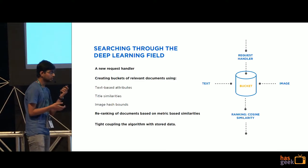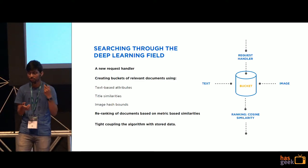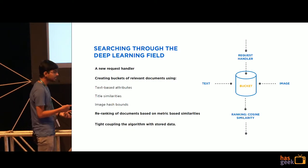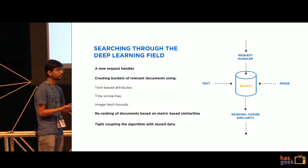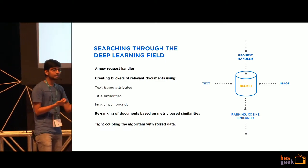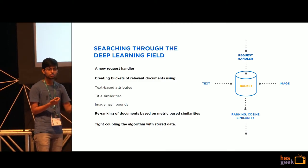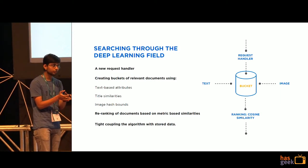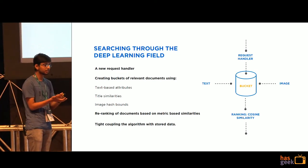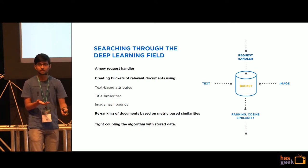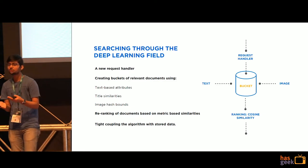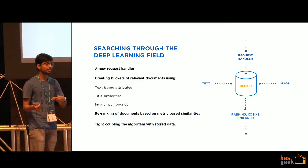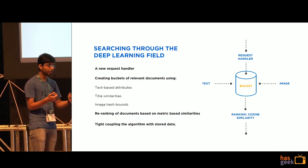Once we have indexed the textual descriptions, deep learning features, and corresponding self-taught hash bits, we needed to develop a proper searching mechanism over the indexed dataset. For this task we created a new request handler to handle all incoming requests. When a request comes in, we create a bucket of similar-looking products based on the hash bounds across the self-taught hash bits already indexed. We then narrow down that bucket to a small subset of required documents based on attributes extracted from titles and descriptions — for example, explicitly requiring 'white check' and 'collar' to be mentioned. Once you have narrowed down your subset, you re-rank them based on the deep learning features indexed in your database compared with the seed image.